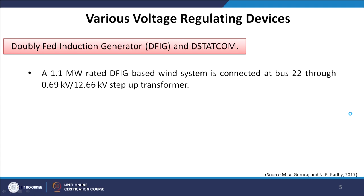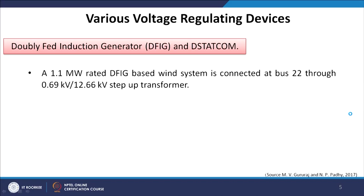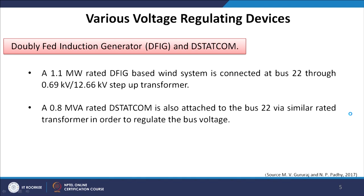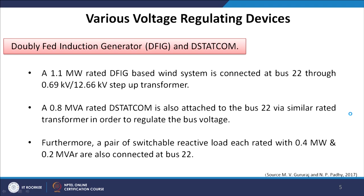Similarly, the DFIG and DSTATCOM are additional devices placed to take care of the system reactive power scenario. A 1.1 MW rated DFIG-based wind system is connected at bus number 22 through a 0.69 kV / 12.66 kV step-up transformer. A 0.8 MVA DSTATCOM is also attached at the same bus. Furthermore, a pair of switchable reactive loads, each rated at 0.4 MW and 0.2 MVA, are also connected at bus number 22.